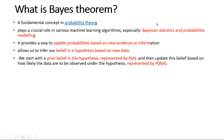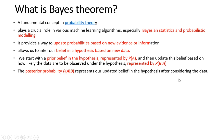When using Bayes theorem, we start with a prior belief in the hypothesis, represented by P(A). We then update this prior belief based on how likely the data are to be observed under the hypothesis, represented by P(B|A). P(A|B) is the posterior probability — it represents the updated belief in the hypothesis after considering the data.